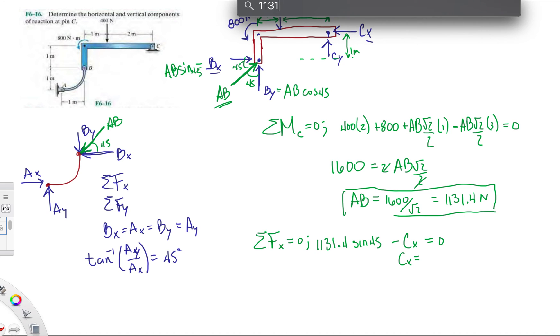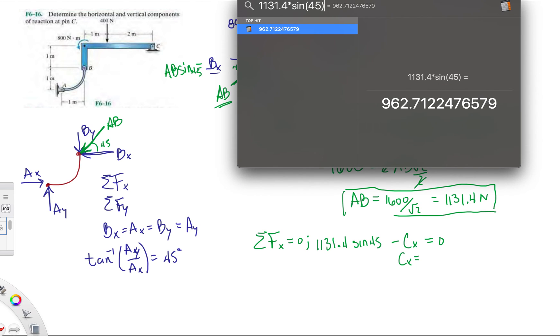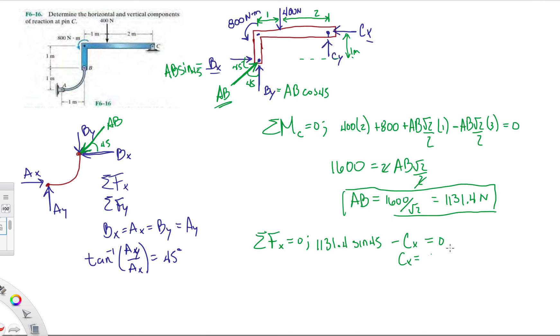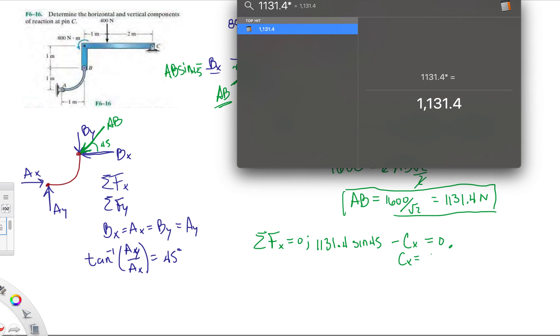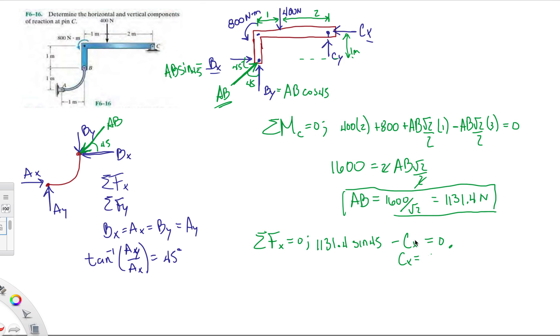Let's see, 1131.4 times sine... that gives us 962.7. Remember that, 962.7 newtons.